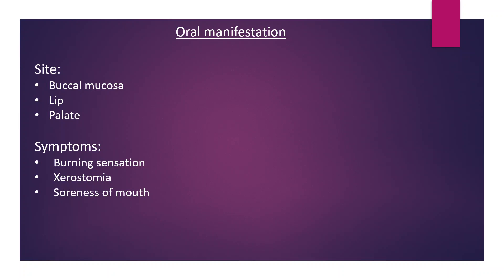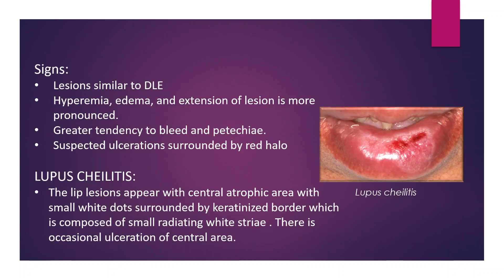Oral manifestations of SLE. Most common sites are buccal mucosa, lip, and palate. Symptoms: patient complains of burning sensation, xerostomia, and soreness of mouth. Signs: lesions are similar to discoid lupus erythematosus; hyperemia, edema, and extension of lesion are more pronounced. Greater tendency to bleed.